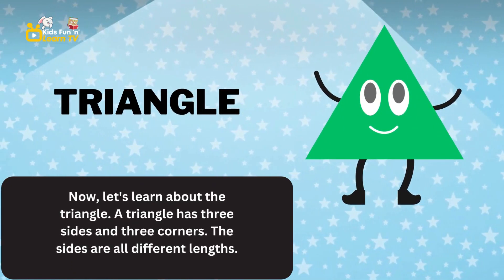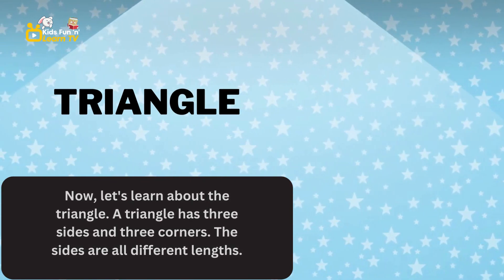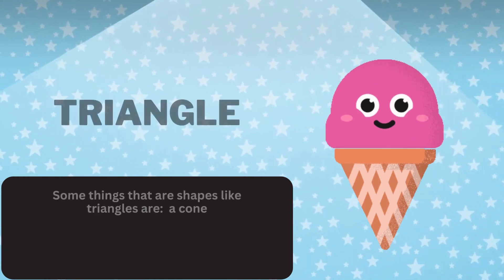Now let's learn about the triangle. A triangle has three sides and three corners. The sides are all different lengths. Some things that are shaped like triangles are a sandwich and a cone.